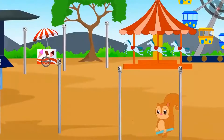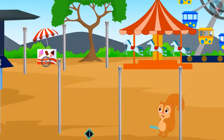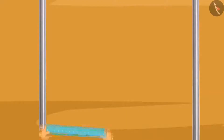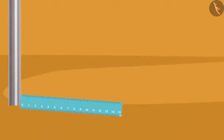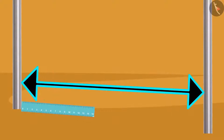Poles were erected at the places where curtains were to be hung. Chanda thought that if she measures the distance between the poles, then she will get the size of the curtain. Chanda began to measure the distance between the poles with her ruler. But Chanda's ruler is very small, and she is unable to measure the distance between the poles with it.